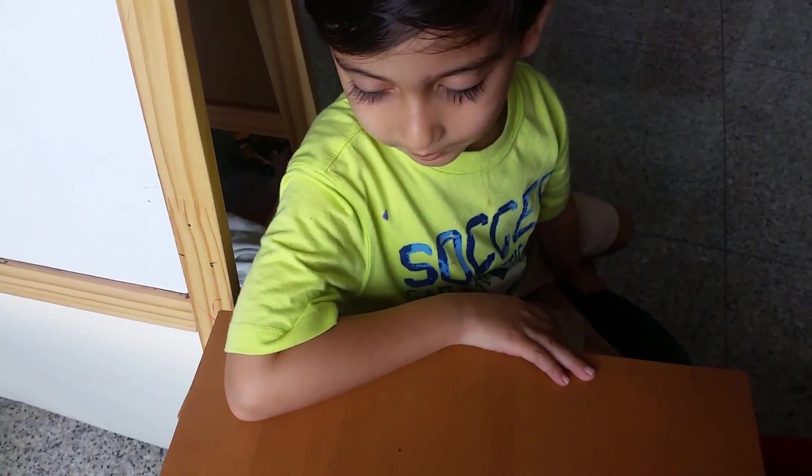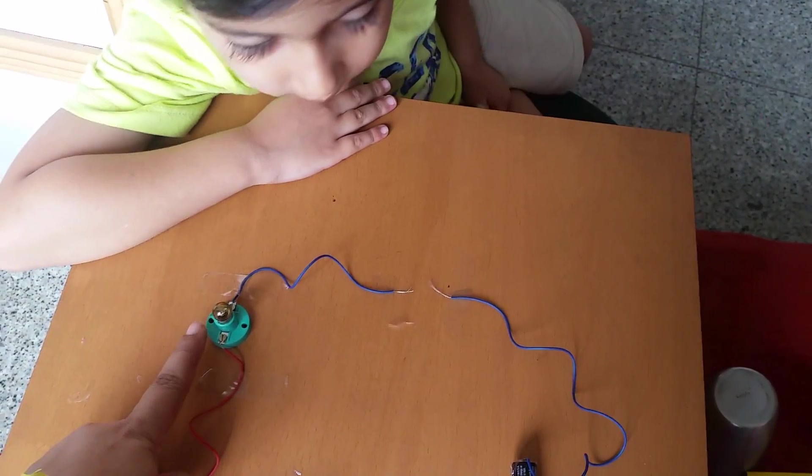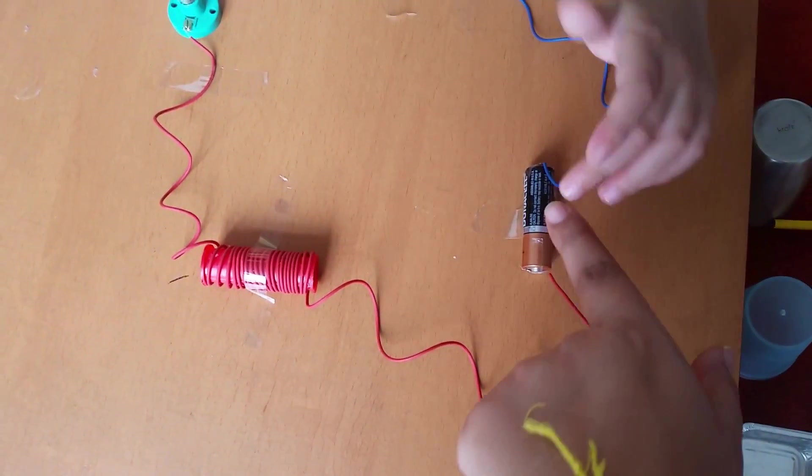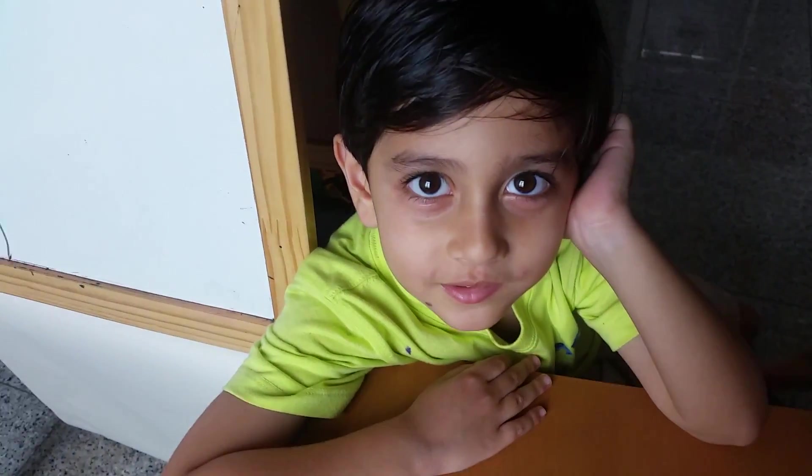Okay Champ, so what is this? A bulb. And where does it get energy from? From battery. How do you get energy? From food.